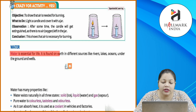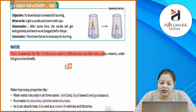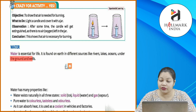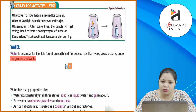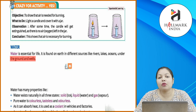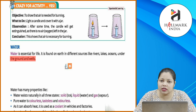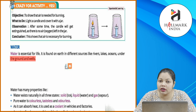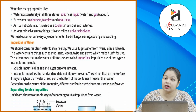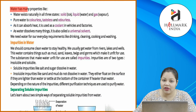Water: water is essential for life. It is found on earth in different sources like rivers, lakes, oceans, under the ground and wells. Aap logon ko pata hai ki paani jo hai, aapke survival ke liye bahut zyada important hota hai, living beings ke liye bahut zyada important hota hai. Iske sources kya-kya hote hain — rivers, lakes, oceans, under the ground, wells.